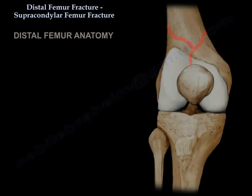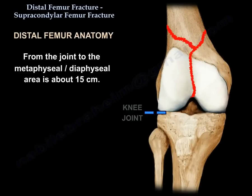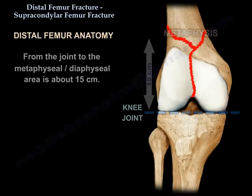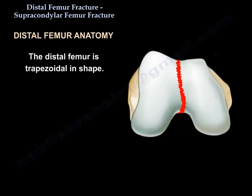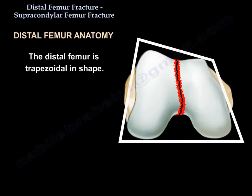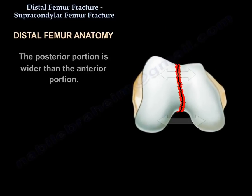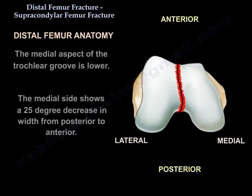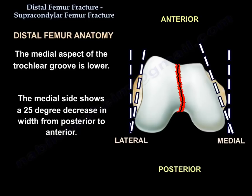Distal femur anatomy: from the joint to the metaphyseal-diaphyseal area is about 15 centimeters. The distal femur is trapezoidal in shape. The posterior portion is wider than the anterior portion. The medial aspect of the trochlear groove is lower, and the medial side shows a 25-degree decrease in width from posterior to anterior.